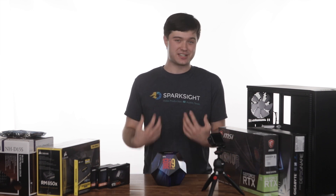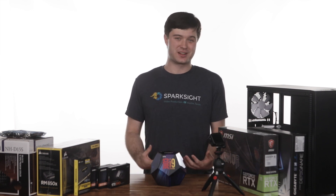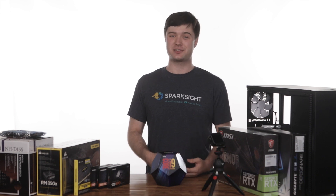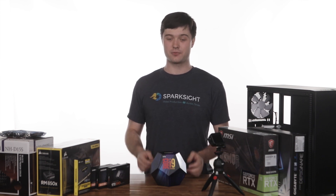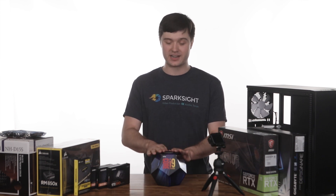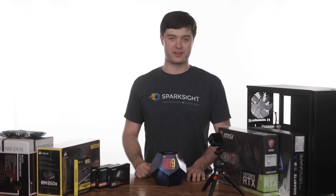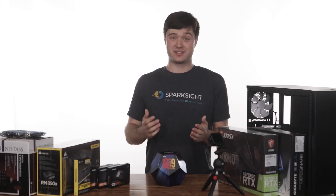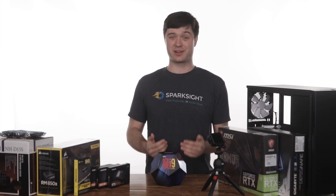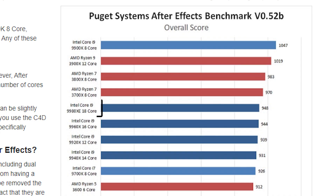Which, for us, is actually kind of good news, because it means we don't have to spend $2,000 on a 9900XE. We can go for a 9900K, which is around $500. This is a massive savings, considering that the 9900XE actually underperforms in most After Effects tasks compared to this CPU, which is $1,500 cheaper.